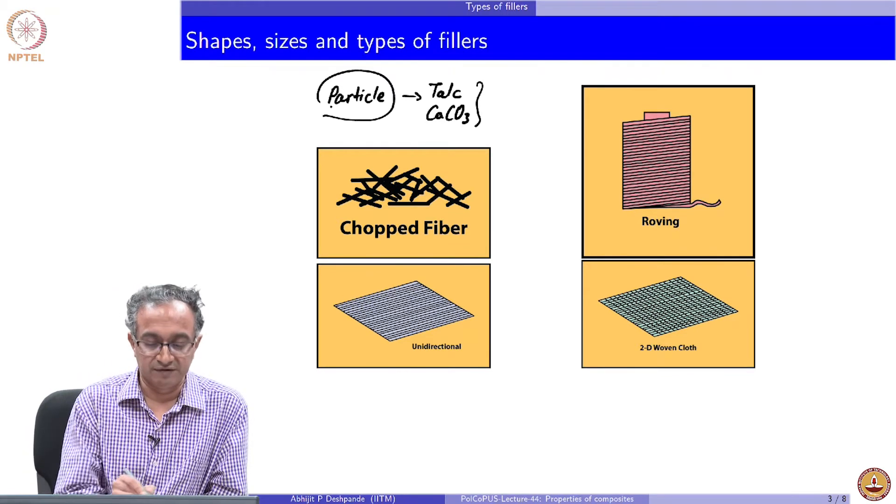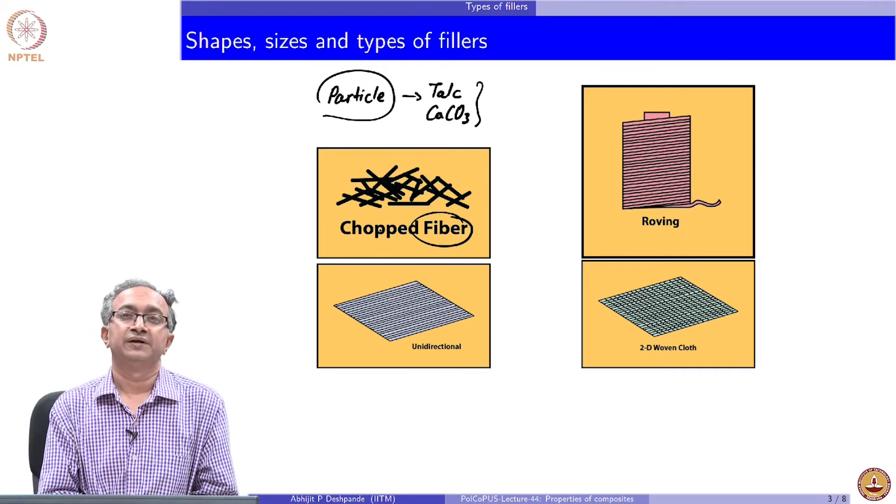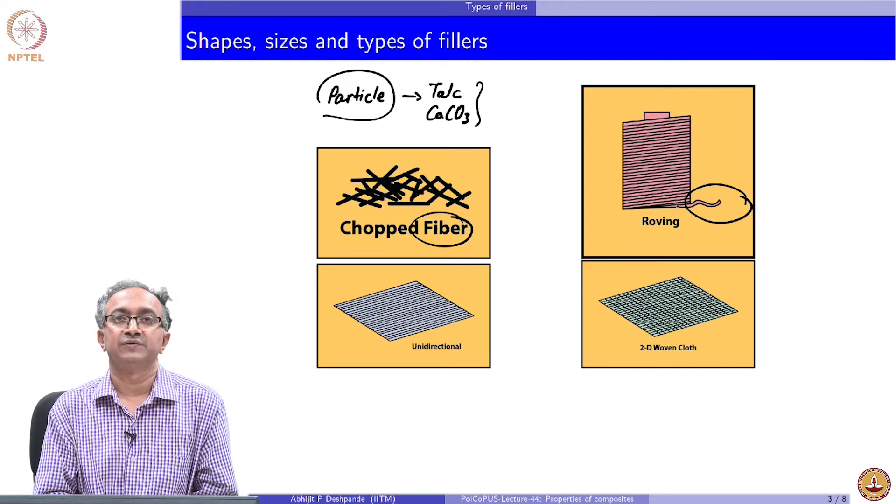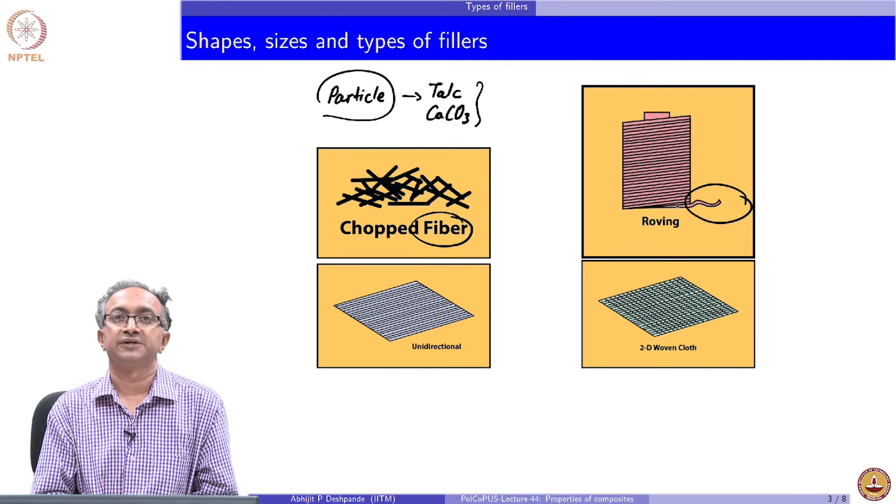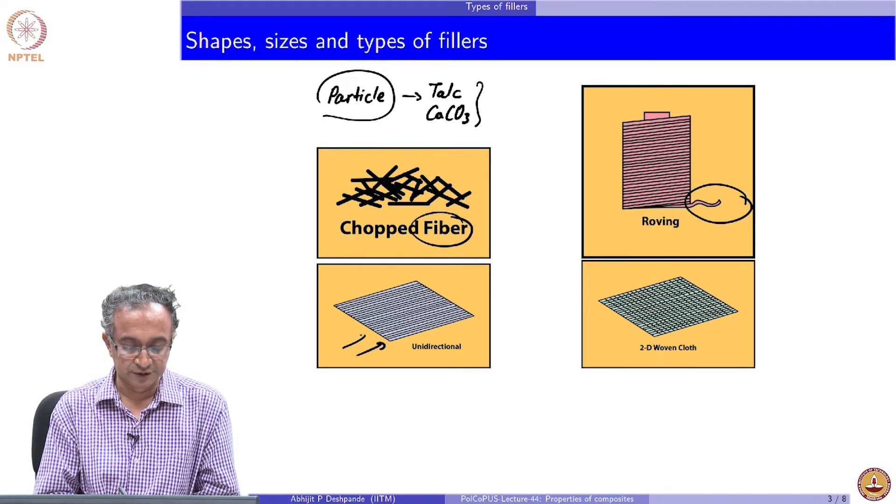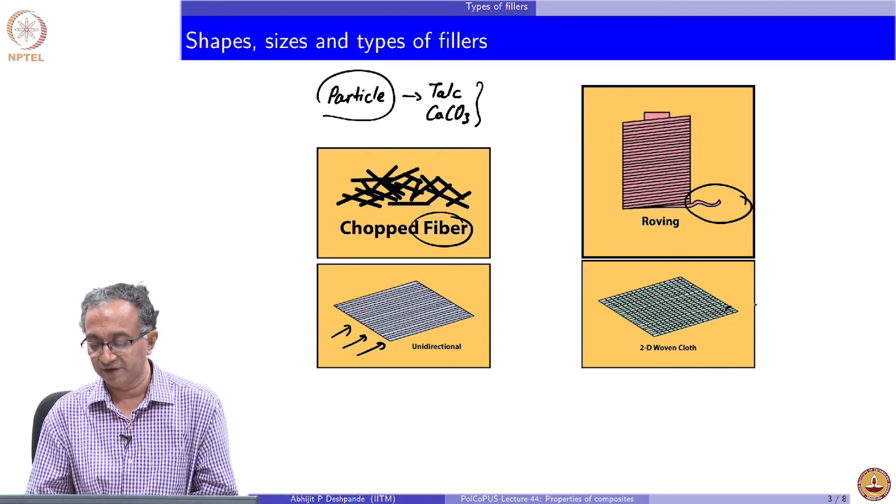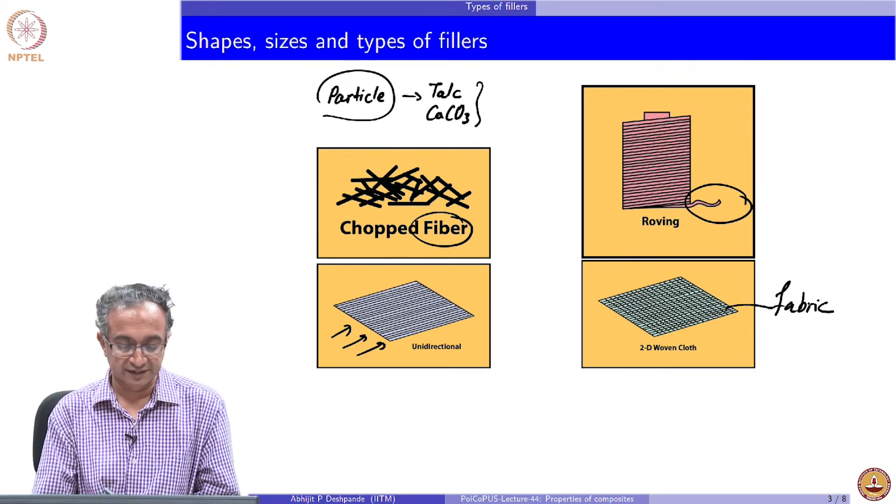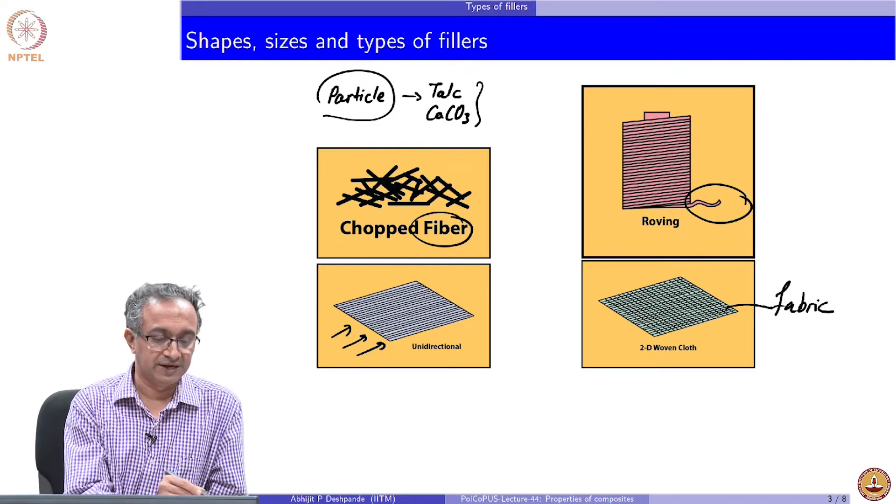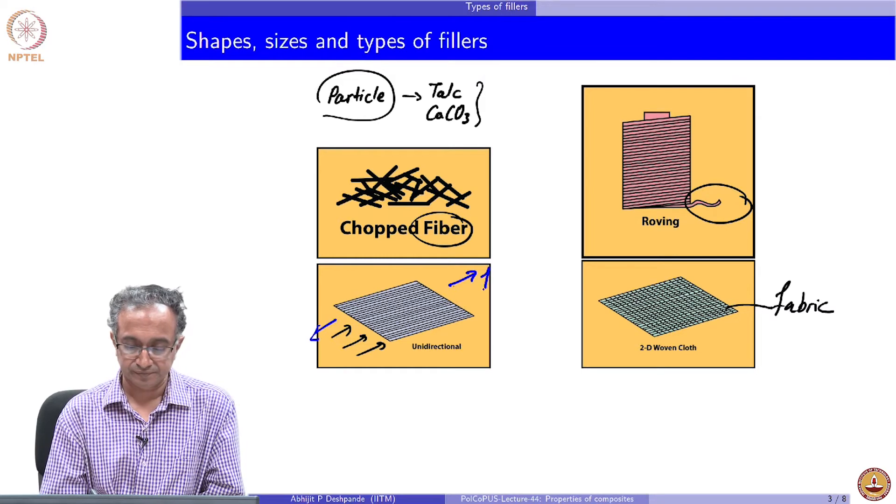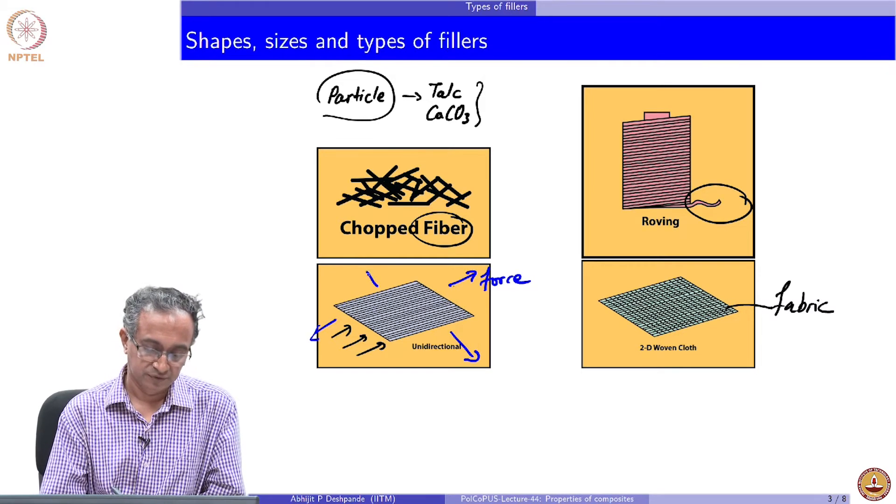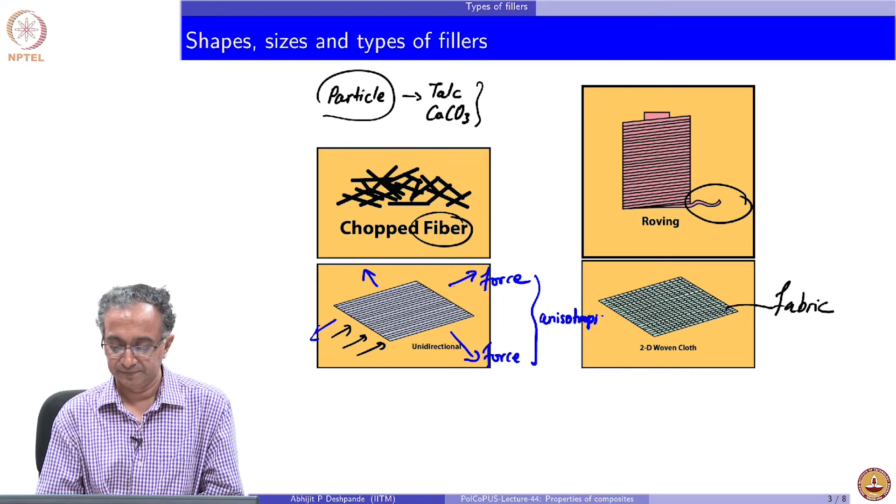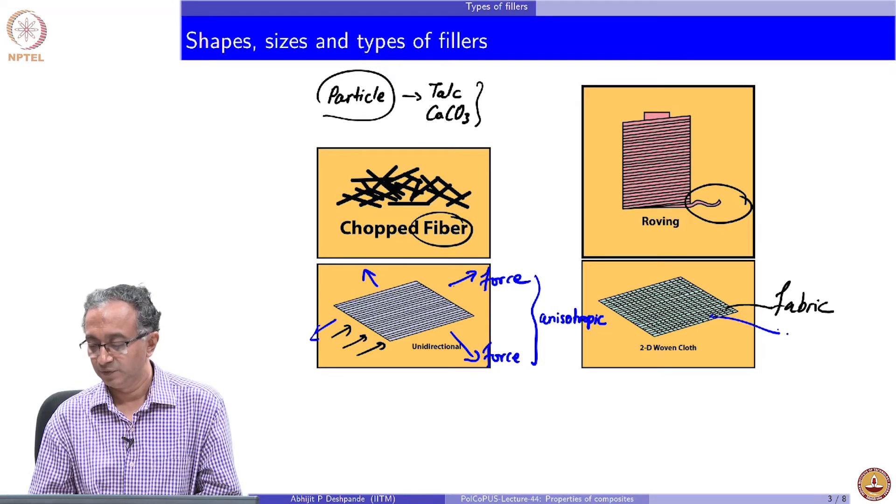For example, instead of adding a particle, we could add a chopped fiber. Many of the filled polymers, chopped fiber is quite commonly added. We could use a roving, basically a fiber which can be taken off of a spool and then incorporate it into a polymeric material. We could use a unidirectional arrangement of the fibers, or we could make a fabric out of the fibers, and you can see that this is going to be anisotropic. If force is applied in this direction, the property is going to be very different compared to property in this direction.